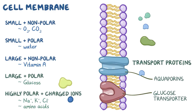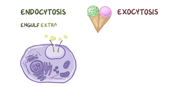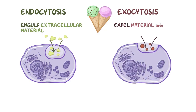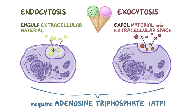However, when the cell needs to transport a lot of molecules, or one very big molecule, it resorts to bulk transport, which comes in two styles: endocytosis and exocytosis. Endocytosis is a process that cells use to engulf extracellular material, and exocytosis is the opposite, during which cells expel material into the extracellular space. Both endocytosis and exocytosis need energy in the form of adenosine triphosphate, or ATP, used in the movement of substances in and out of the cell.